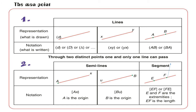Now let's move to the second table. I have here semi-lines. Let's take two examples: A, X and B, U. Look at the first extremity, A — I have a fixed point A. It has a limit right here, while at the other extremity X it has no limit — it is unlimited. So A is the origin of this semi-line.